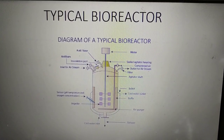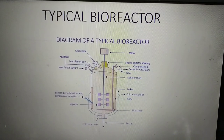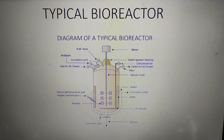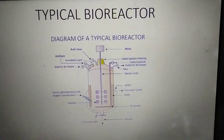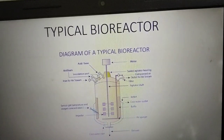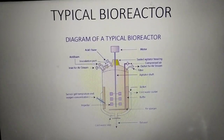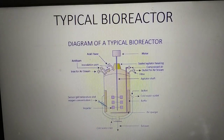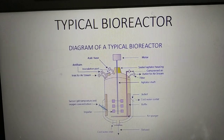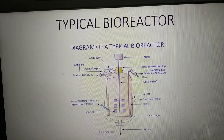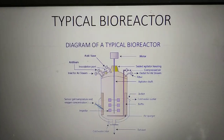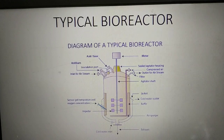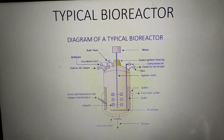How do you construct a bioreactor? First, consider the body material. Then consider holding capacity — usually 25 to 100 gallons, sometimes 2,000, 5,000, or 10,000 gallons. We have something called Horton spheres — H-O-R-T-O-N spheres — which can hold 2,500,000 to 5,000 gallons of media. Make a note of that.